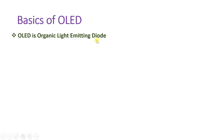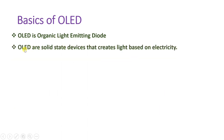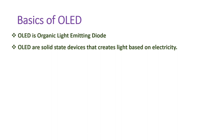OLED means organic light emitting diode. It is a solid-state device that creates light based on electricity, so we don't need an extra light source for an OLED display panel — OLED itself generates light based on the electrical signal given to it. Its working is almost similar to a diode, and its working principle is nearly identical to LED, with only a few layers additionally added in OLED that make use of organic radiation of light.